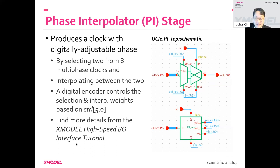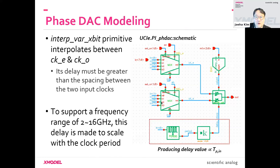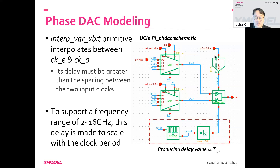There are more details in the tutorials. The key block in the phase interpolator model is the muxes choosing two phases out of eight, and then an interpolation x-bit primitive which does the mixing. The interpolation weight can be controlled in an analog fashion, but since we want a digitally adjustable phase, we put a D-to-A converter — another x-model primitive — that takes the digital code and converts it to an analog weight.